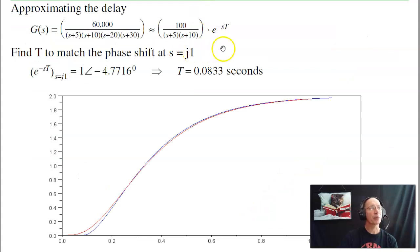For example, I can calculate that delay. If these two systems are the same, they should have the same gain and phase shift at each point. Let's pick a point like one radian per second. The phase shift of the fourth order system should match the phase shift of the second order system. To do that, I have to add a delay of 83 milliseconds. Then the blue line, the second order system with a delay, has almost the same step response as the red line.